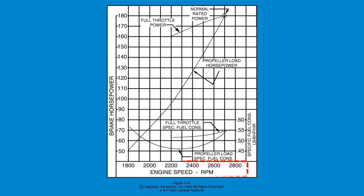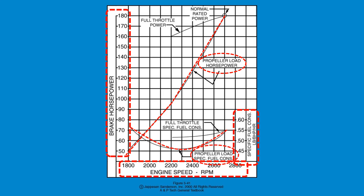Horizontally along the bottom of this performance chart is the engine speed in RPM. Running diagonally from the bottom left to the top right is the propeller load horsepower curve. Vertically on the left side of the chart is the brake horsepower. Vertically along the bottom right side of the chart is the specific fuel consumption in pounds per brake horsepower per hour. Running horizontally near the bottom of the chart is the propeller load specific fuel consumption curve.